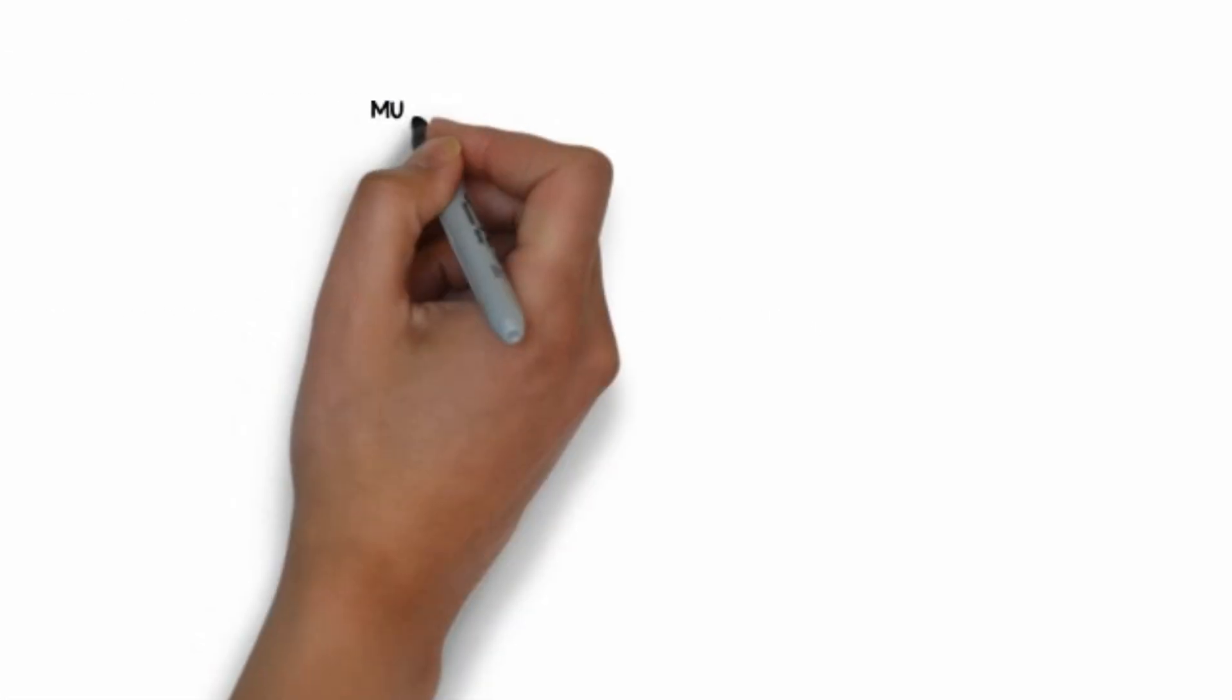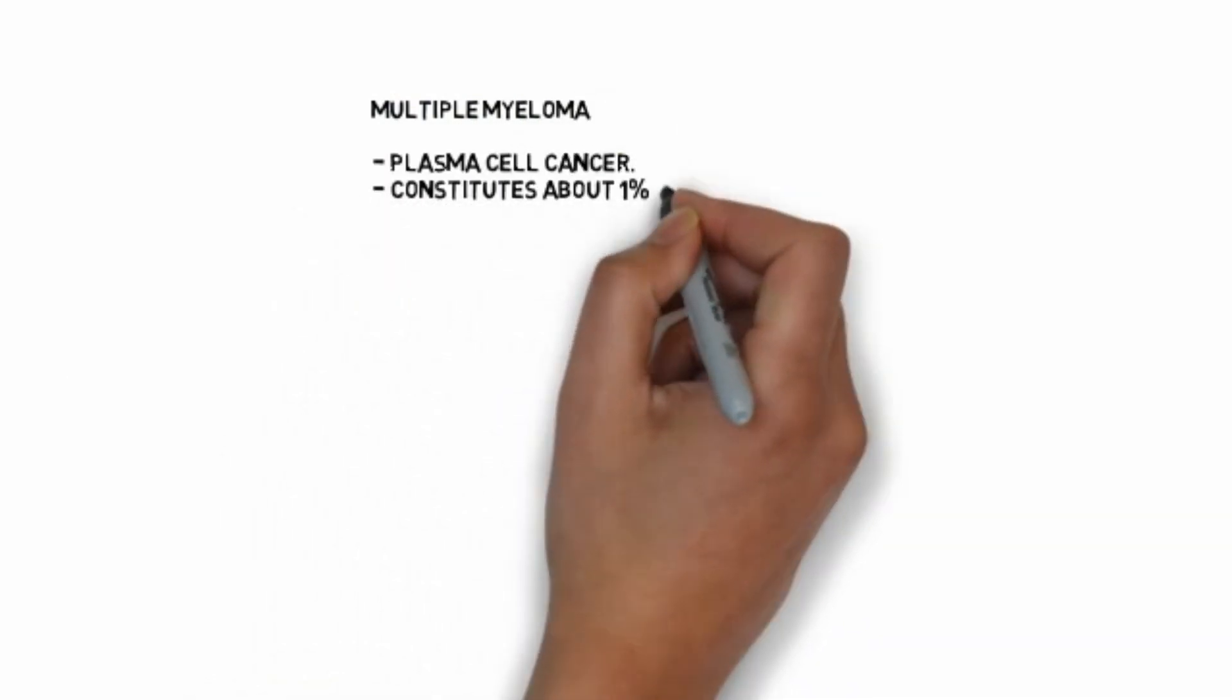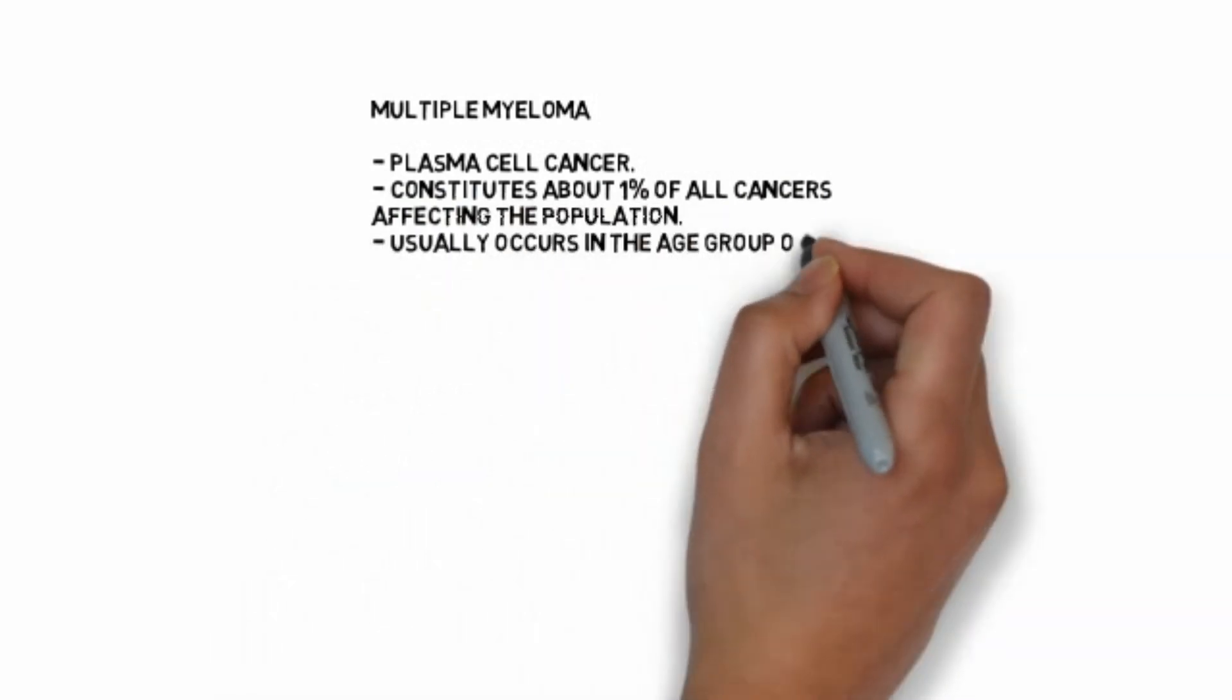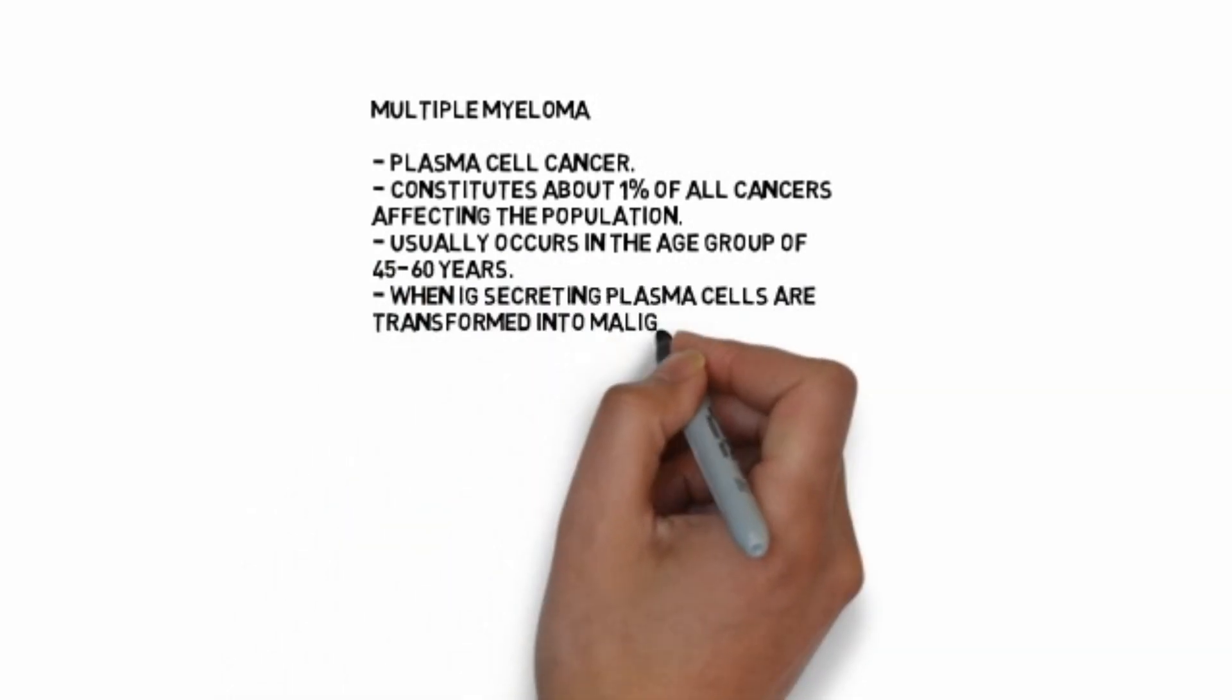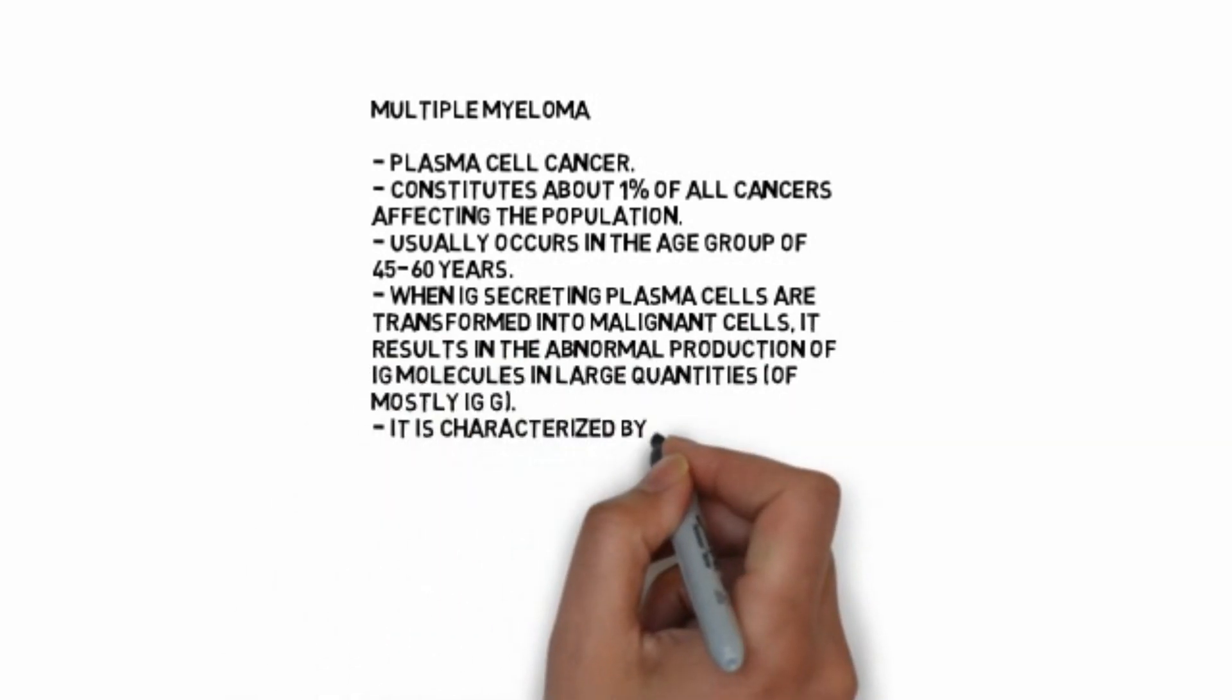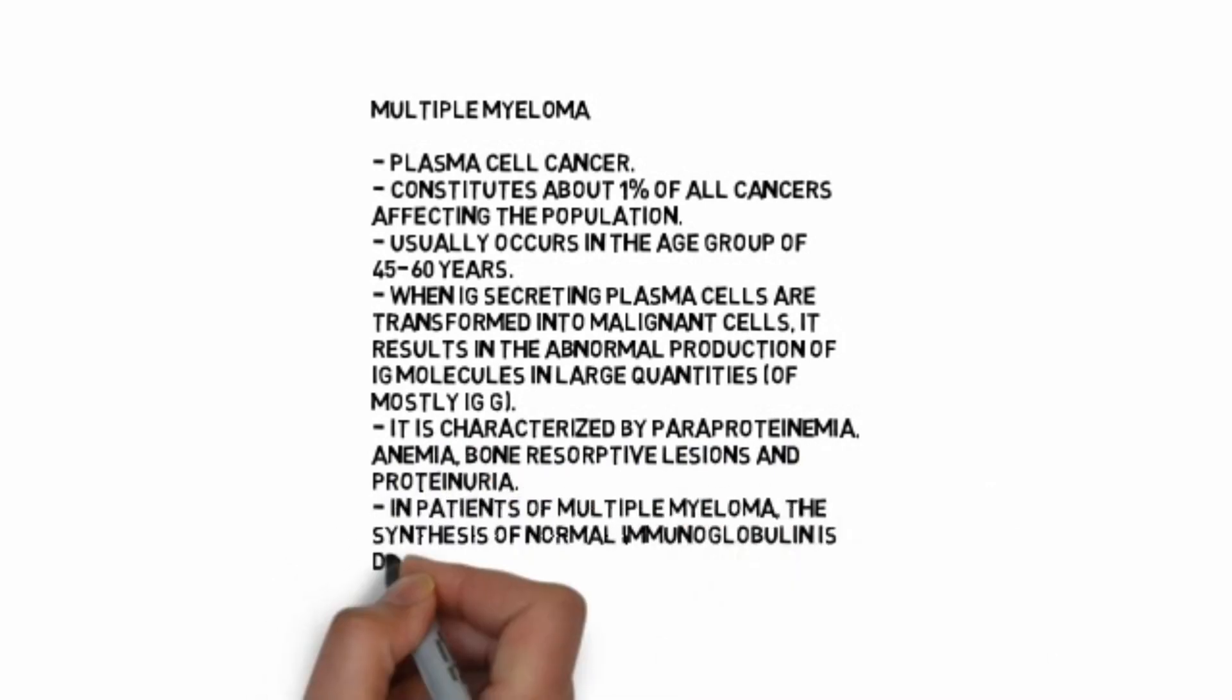Multiple myeloma: plasma cell cancer constitutes about one percent of all cancers affecting the population, usually occurs in age group of 45 to 60 years. When Ig-secreting plasma cells are transformed into malignant cells, it results in abnormal production of Ig molecule in large quantities, mostly IgG. It is characterized by paraproteinemia, anemia, bone resorptive lesions, and proteinuria. In patients with multiple myeloma, synthesis of normal immunoglobulin is diminished, causing depressed immunity.